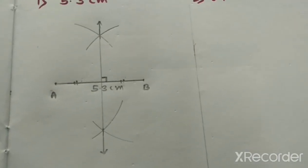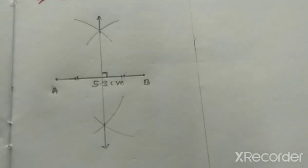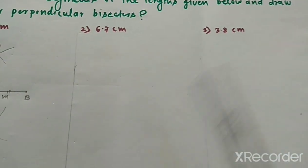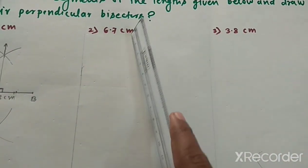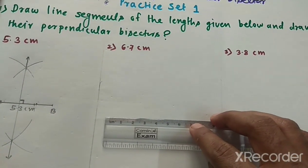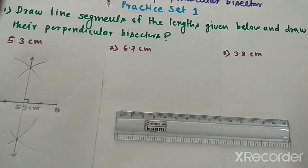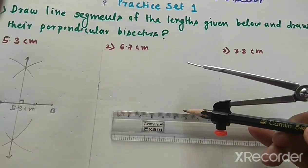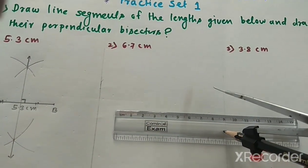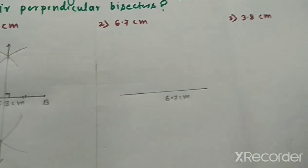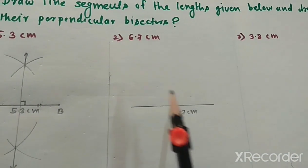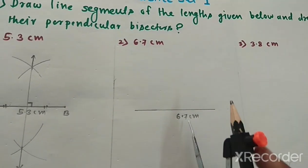See how it becomes. Next, segment with distance 6.7 cm. So draw a segment with distance 6.7 cm with help of this scale. This is a segment with distance 6.7 cm.